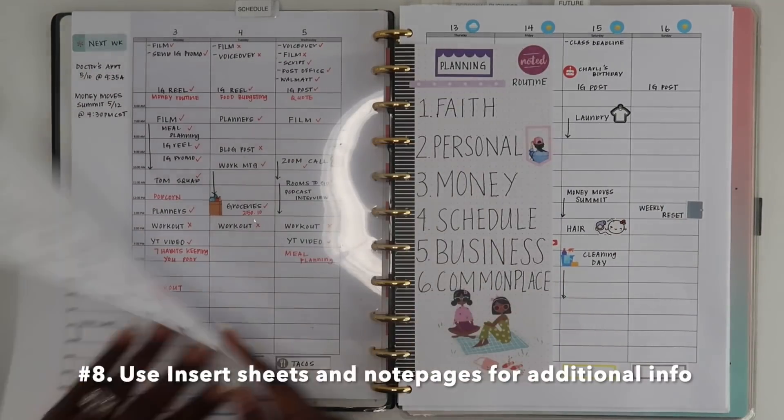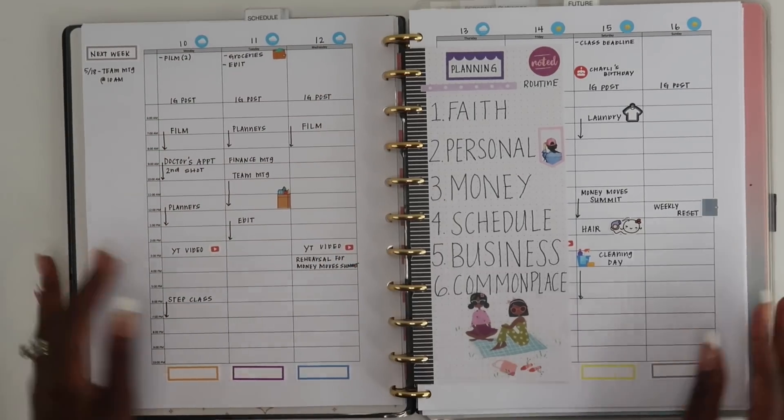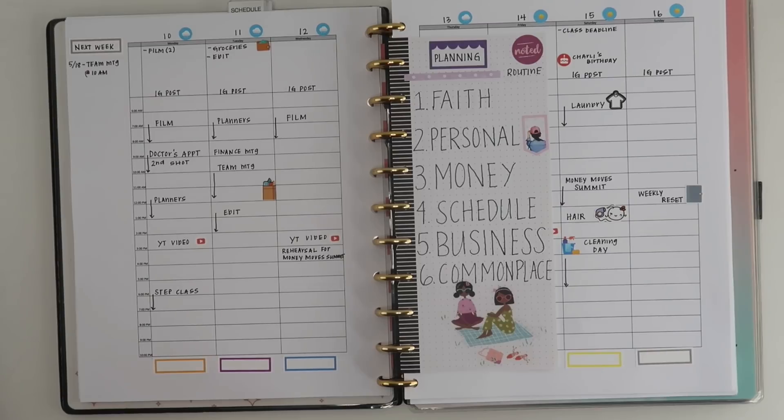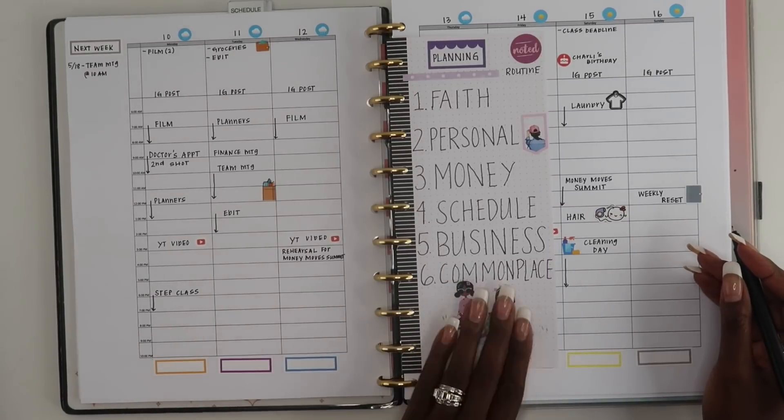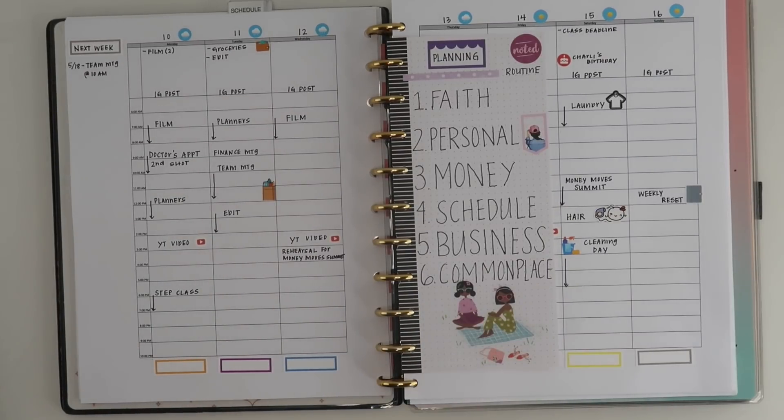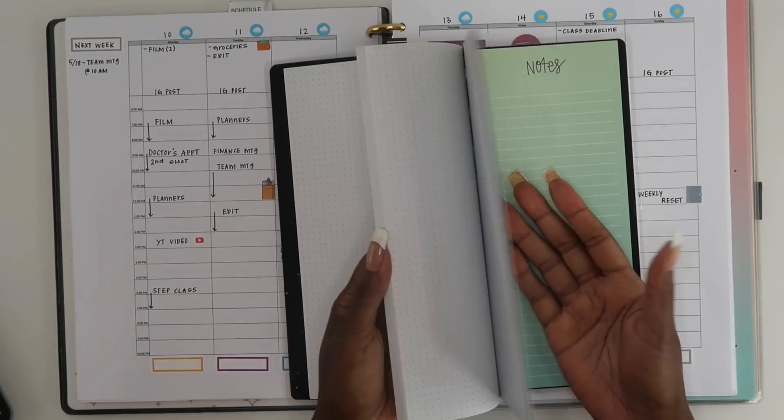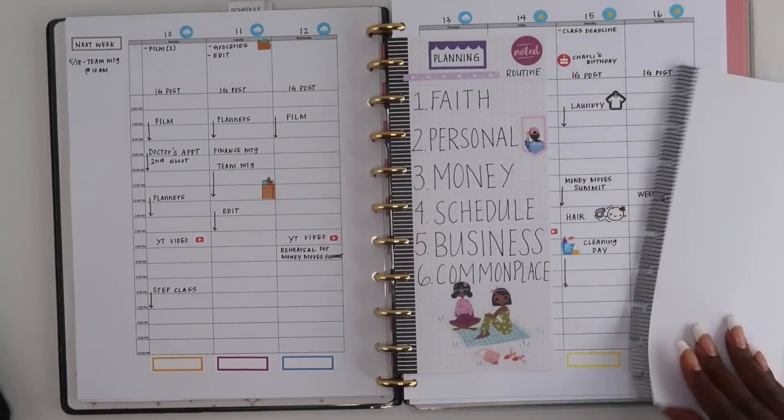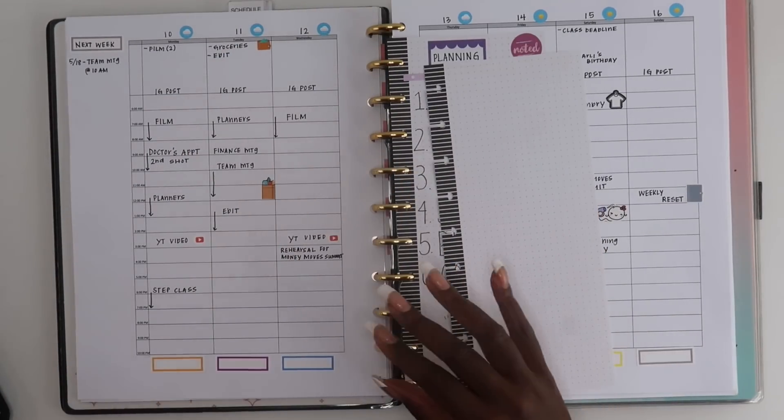My next tip is to make sure that you use insert sheets and notebook paper in order to keep all of your reference information. I like to keep my planning routine and any other additional things that I need to do. It might be meeting notes or things from other sections or projects that I need to complete on an insert sheet.